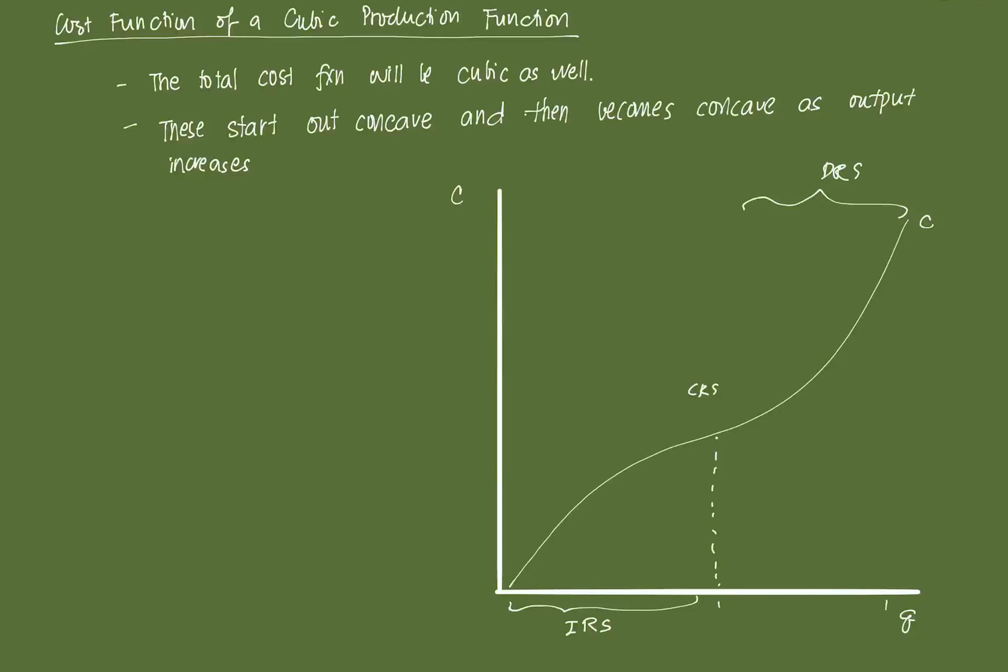So if you'll notice, in the range of Q wherein the cost is concave, if we graph the marginal cost, it is decreasing. In this range, it can be said that average cost is also decreasing.